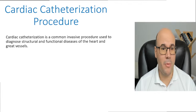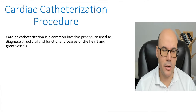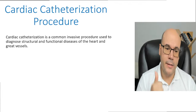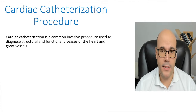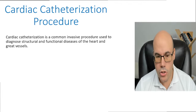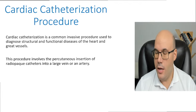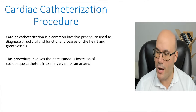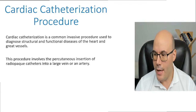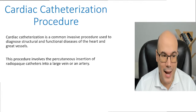What are common sites used for cardiac catheterization? The femoral artery, the radial artery, the brachial artery, and the internal jugular vein. The procedure involves the percutaneous insertion of a radiopaque catheter into a large vein or artery.